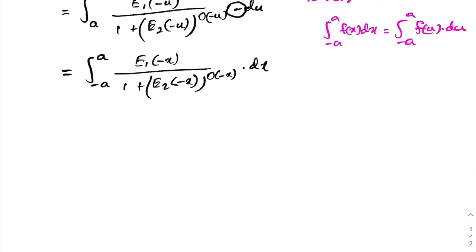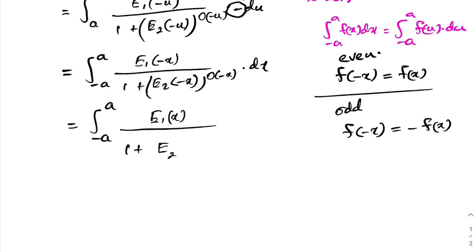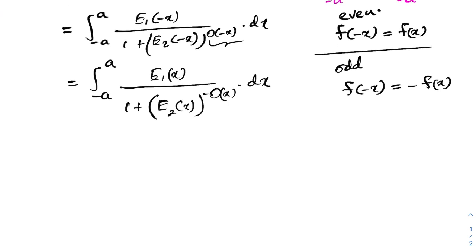Now we apply the even and odd function identities: for an even function, f(-x) = f(x); for an odd function, f(-x) = -f(x). So our integral becomes the integral from -a to a of e1(x) — since e1 is even — over 1 plus e2(x) raised to the -o(x), dx.